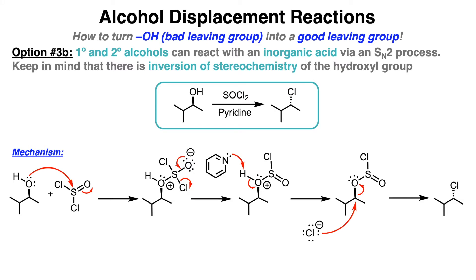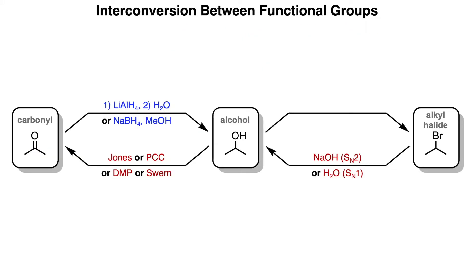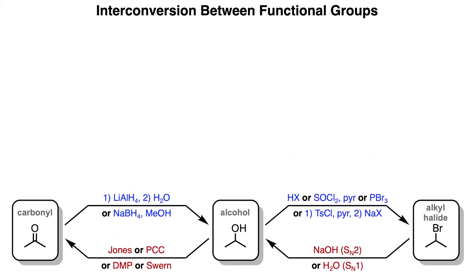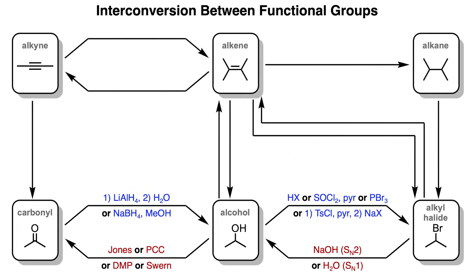Now we can fill in this schematic with the four types of alcohol displacement reactions to go from an alcohol, which is a bad leaving group, into an alkyl halide, a good leaving group. And we can even expand this to show even more interconversions between functional groups that you previously learned about.